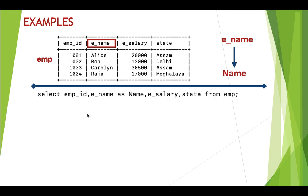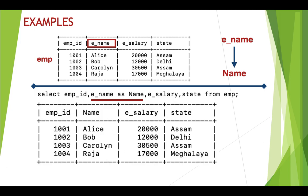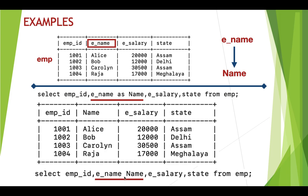For doing that the query would be: SELECT emp_id, ename AS name, esalary, state FROM emp. After the column 'ename' I have used the keyword AS followed by the new name 'name'. I have not done anything to emp_id, esalary, and state, therefore they will be displayed as is. As a second method, using a space instead of AS — SELECT emp_id, ename name, esalary, state FROM emp — gives the same result.